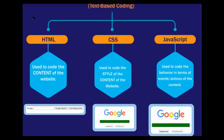JavaScript is the coding part. HTML covers text inputs, labels, buttons — the content part. For example, the word 'Submit' written on a button has to be coded in HTML. The CSS part styles the content, and JavaScript codes the behavior in terms of actions or events. For example, on Google you can see the input field, 'Google Search', and 'I'm Feeling Lucky' — those are done with HTML. The font styling is done with CSS, and the functionality is done with JavaScript.